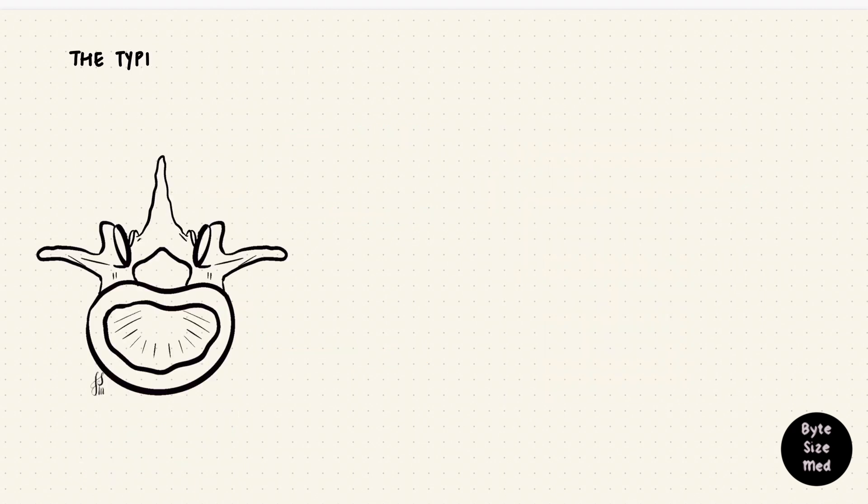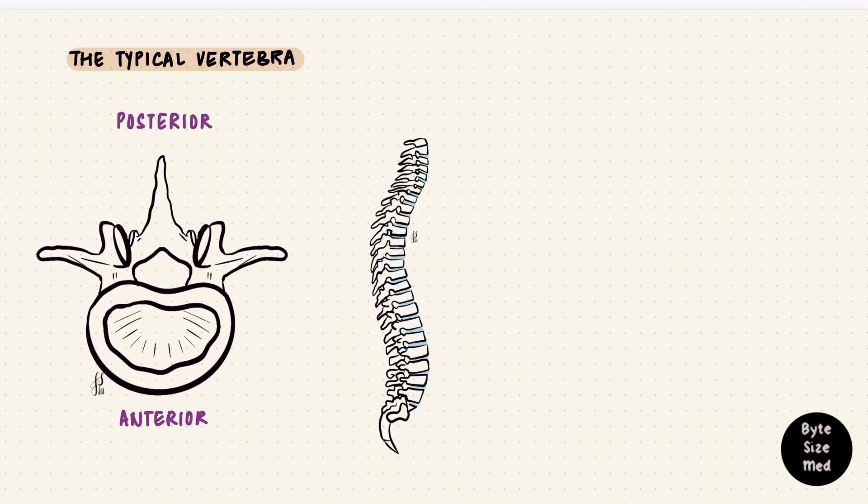Assume this is a typical vertebra when seen from above. To understand it, we will need different angles, but this is where we're starting. This would be the anterior part, and this would be the posterior part. Posteriorly are the spinous processes, which we can feel as the spine. That's how you can tell which is the front and which is the back.